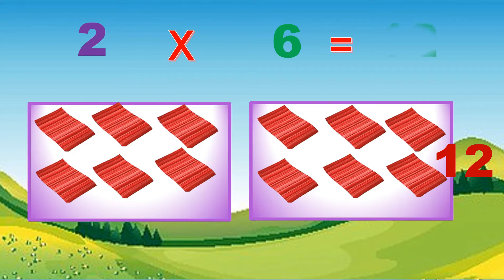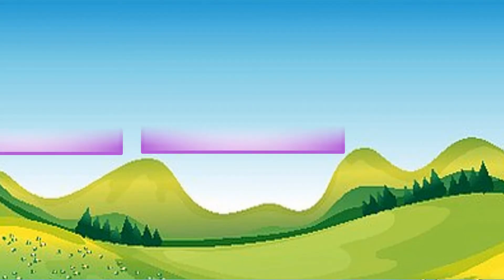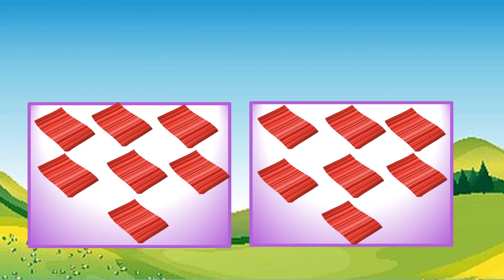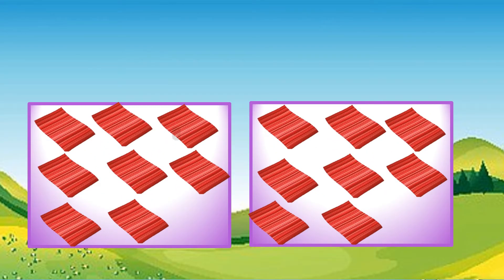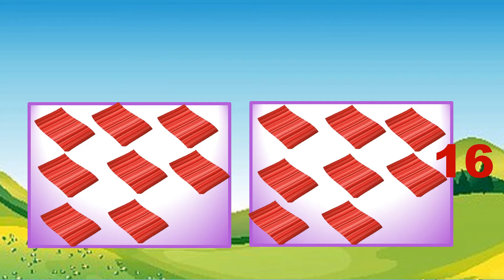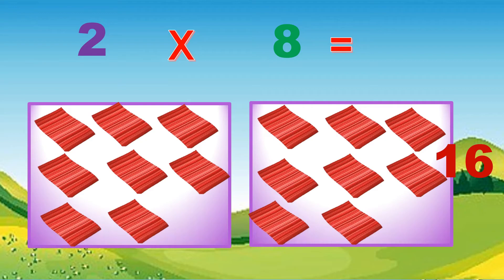Two sets of seven. Skip counting: seven, fourteen. Two times seven equals fourteen. Two sets of eight. Skip counting: eight, sixteen. Two times eight equals sixteen.